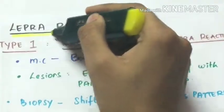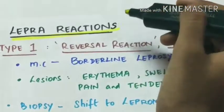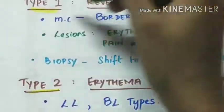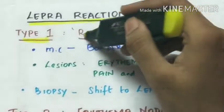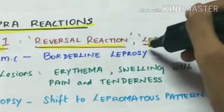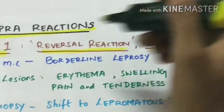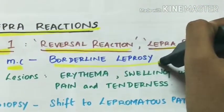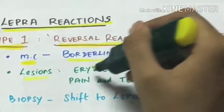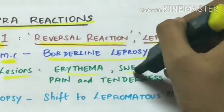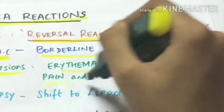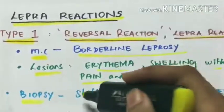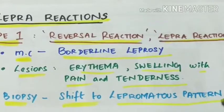Leprosy reactions are of two types: Type 1 and Type 2. Type 1 is also called the reversal reaction. These are most commonly seen with borderline leprosy. The lesions here are erythema and swelling with pain and tenderness. On biopsy, there is a shift to lepromatous pattern.